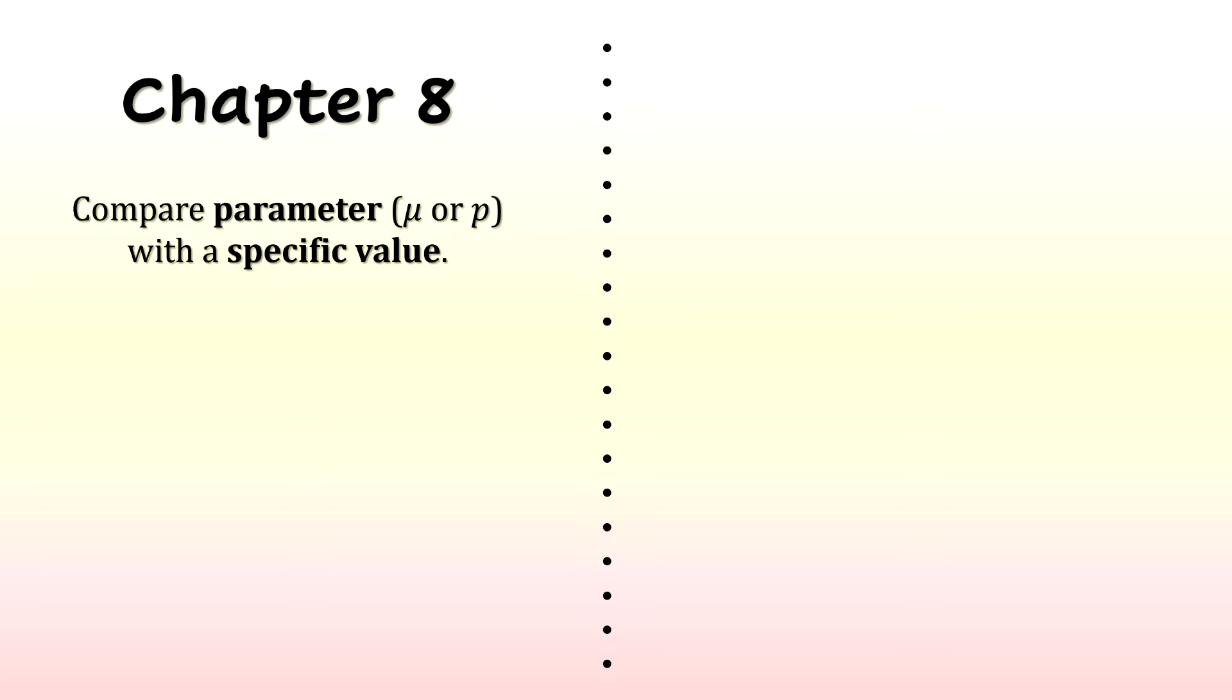All of the tests that we learned about all involved comparing a parameter with a specific value. And the two parameters we focused on were mu, which is the population mean or average, and p, which stands for the population proportion. Either way, we were comparing the parameter with a specific value.